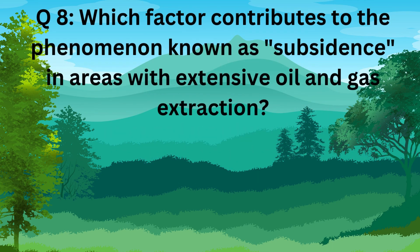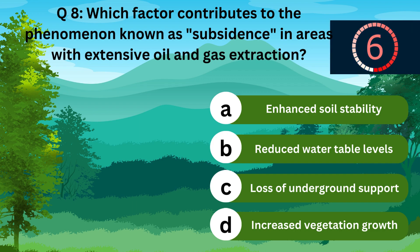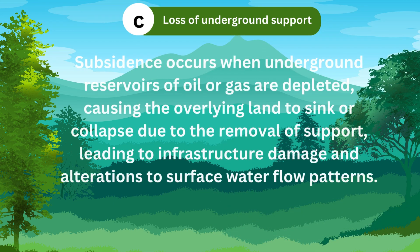Question 8. Which factor contributes to the phenomenon known as subsidence in areas with extensive oil and gas extraction? A. Enhanced soil stability. B. Reduced water table levels. C. Loss of underground support. Or D. Increased vegetation growth. The correct answer is C. Loss of underground support.